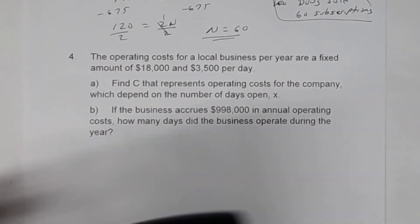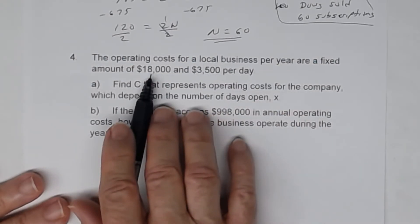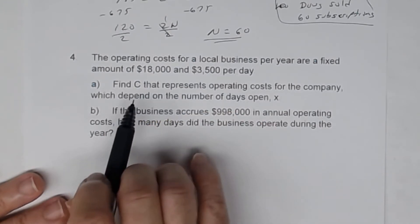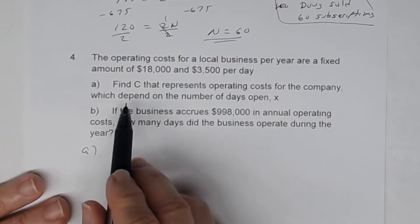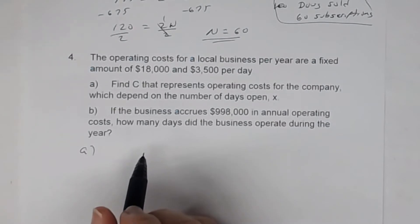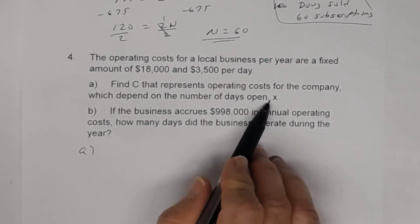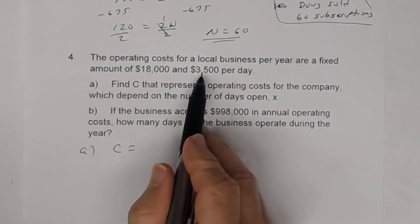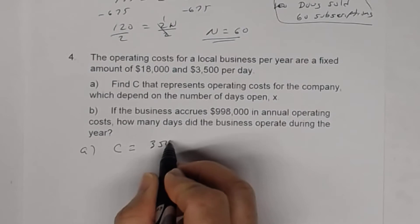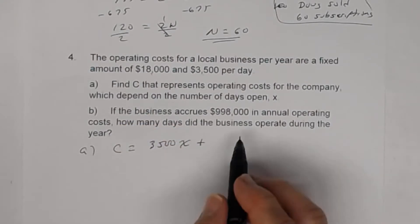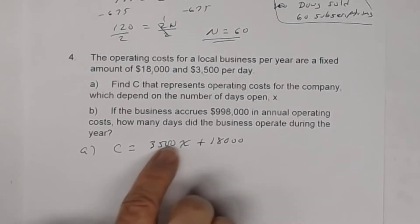Number four. You're told that the operating costs for a local business per year are a fixed amount of $18,000 and $3,500 per day. In Part A, you want to find C, which represents the operating costs for the company, which depend on the number of days open. So the relationship between C and X — C is the cost, X is the number of days — our cost will equal $3,500 per day times X, the number of days.